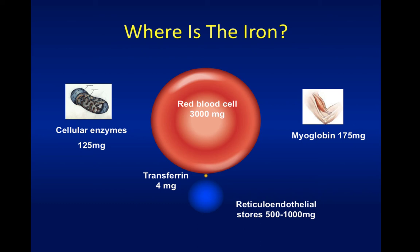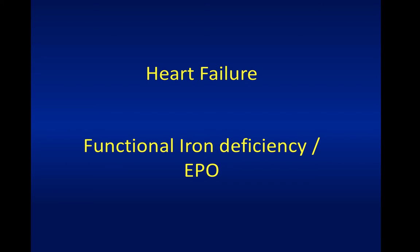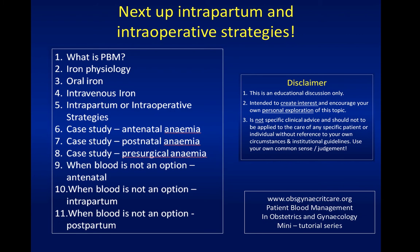Intravenous iron is also used for a range of other conditions, including heart failure where there is evidence it improves myocardial function, and functional iron deficiency particularly in patients on erythropoietin. I hope you found this useful and it gives you a good mental model for when intravenous iron should be used and how to discuss it when consenting a patient. Next up, we'll cover intrapartum and intraoperative strategies to minimise blood loss. Thanks for listening, and see you next time.